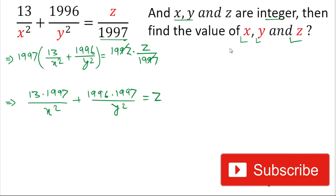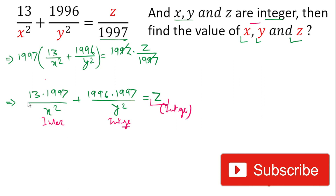In the question they have mentioned that x, y, and z are integers, meaning z is an integer. So for the value of z to be an integer, the whole term on the left side should also be an integer — each term's value should also be an integer. Now if you look at 13 and 1997, these are prime numbers.